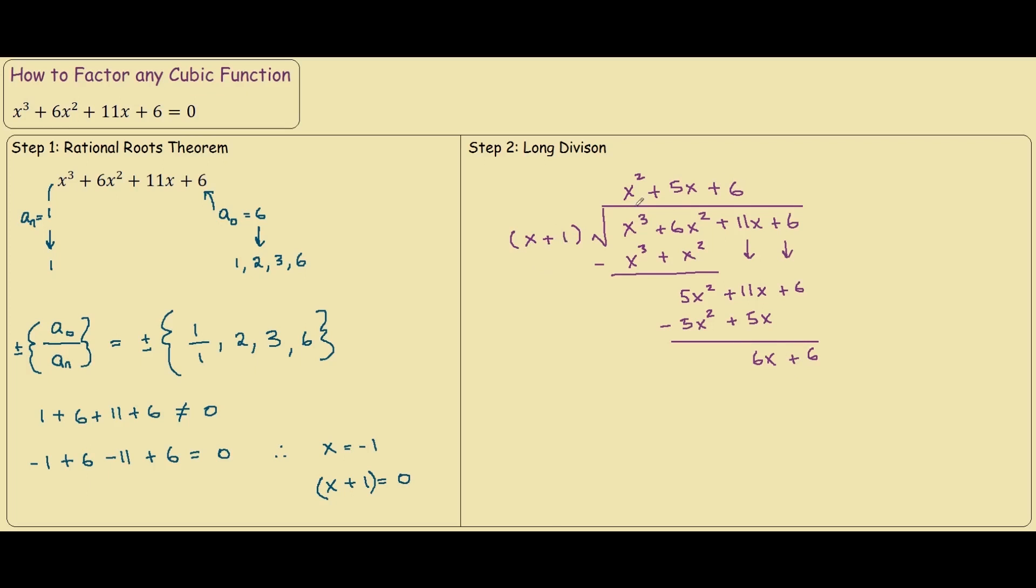So, x plus 1 times 6 is 6x, plus 6, and this will equal 0, which means we've finished our long division.